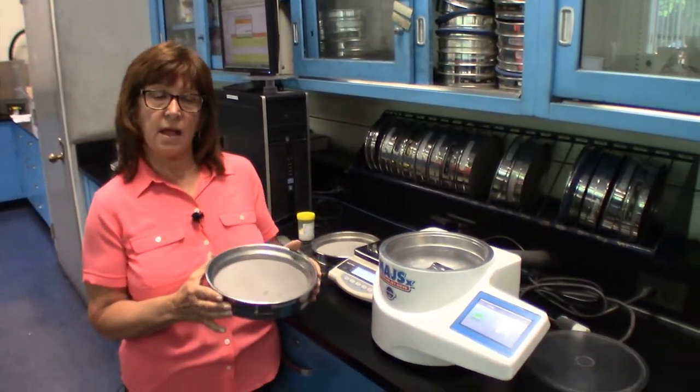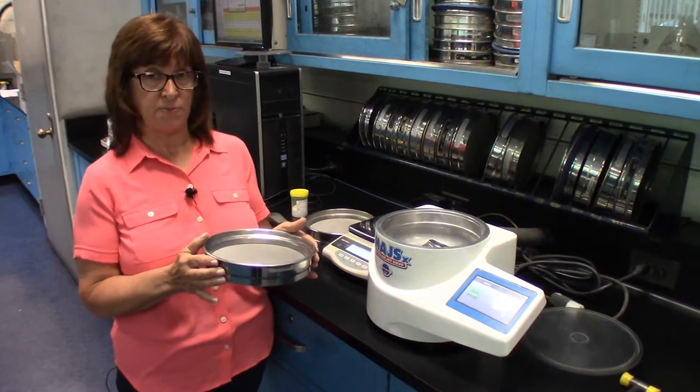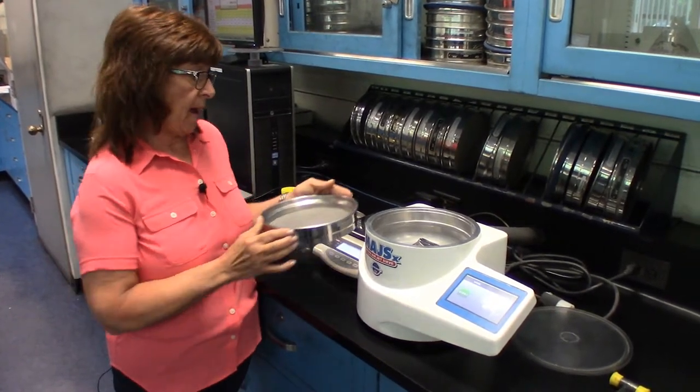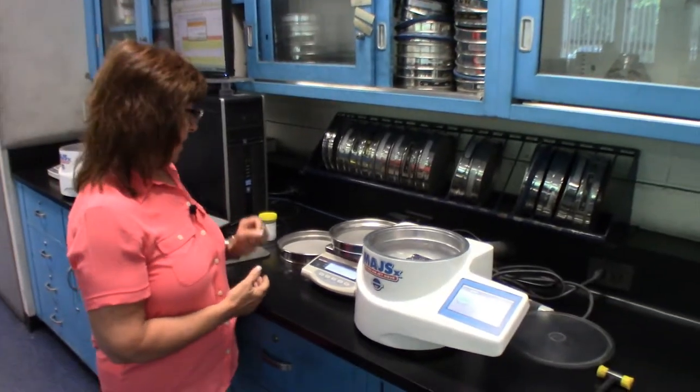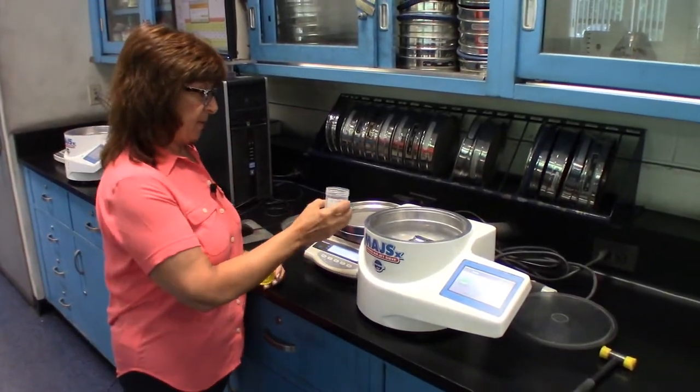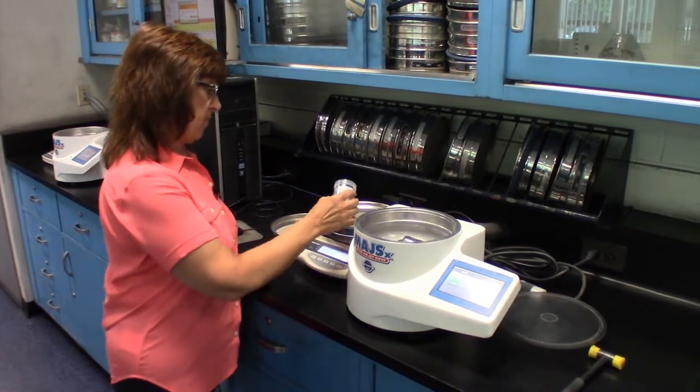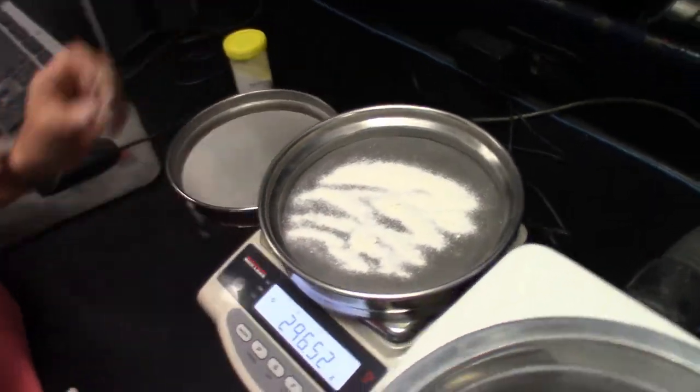To begin the analysis, I will place the 200 mesh screen, which is my finer screen, on the balance. I will record that weight and then I will add my sample. Typically I use a 20 gram sample and then I will record that weight.